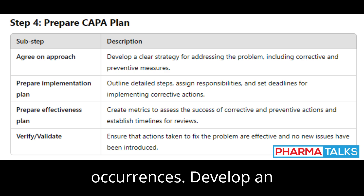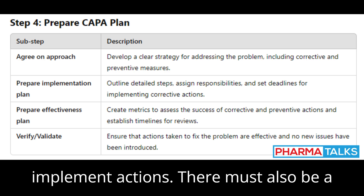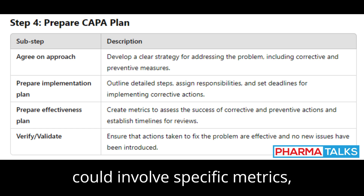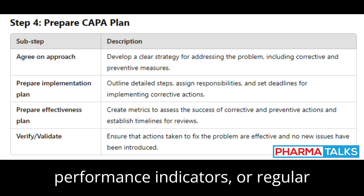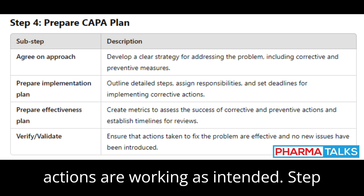Step 3: Develop an Effectiveness Plan. It's not enough to implement actions — there must also be a plan to measure their effectiveness. This could involve specific metrics, performance indicators, or regular reviews to ensure that the corrective actions are working as intended.